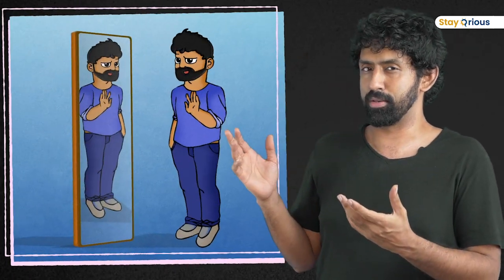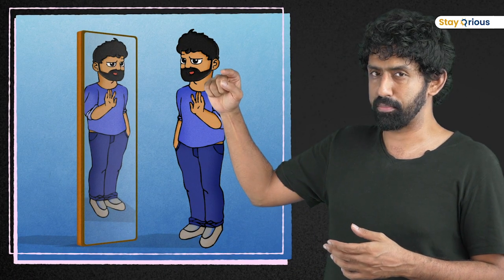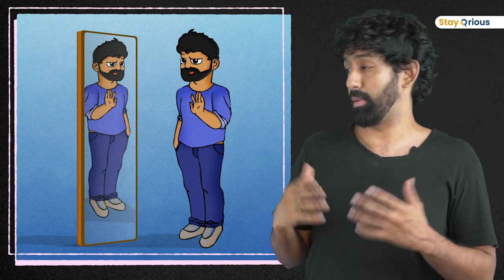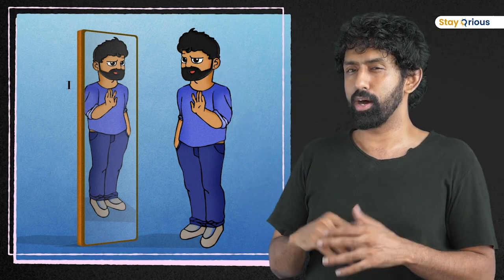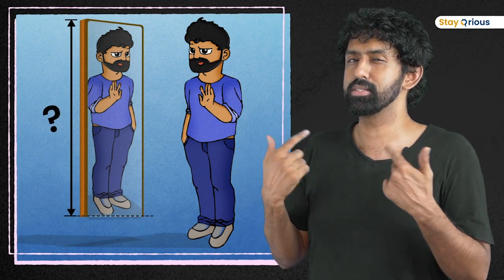Now, the question is, if I have a mirror in my house that is starting right from my head near my eye, and then it's going all the way down, I'm able to see myself fully in that. How much of that mirror can I remove and still see myself fully?